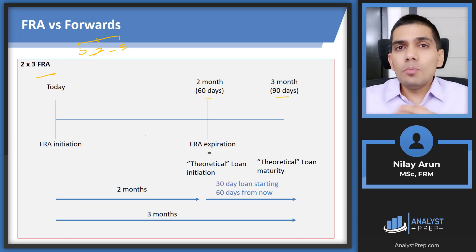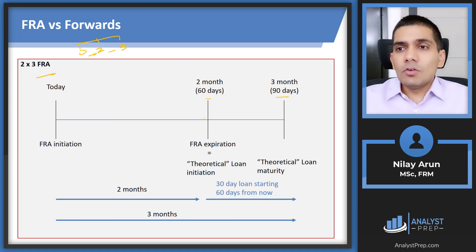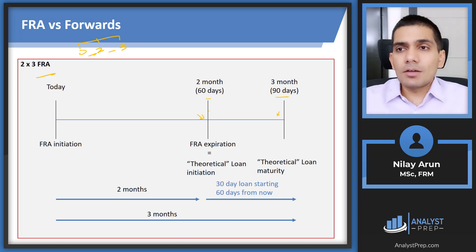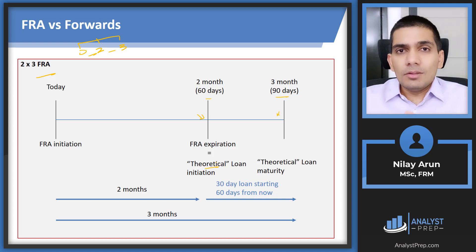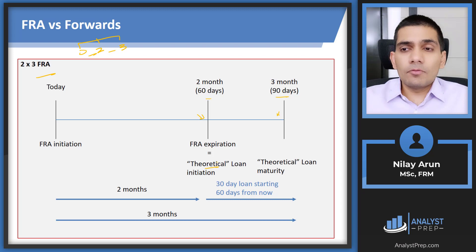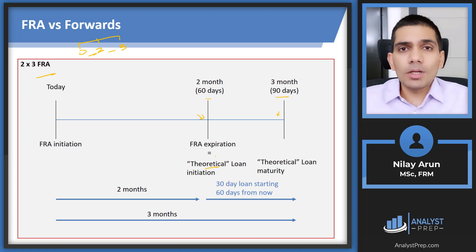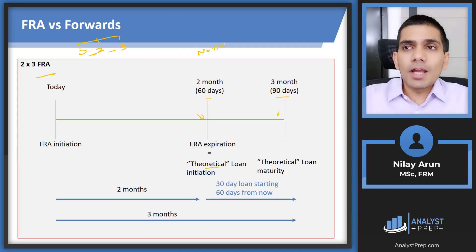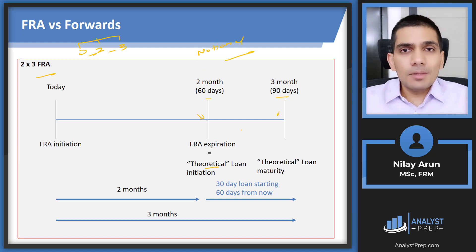We enter the forward contract today, but it expires at the two-month mark — not at three months. The theoretical loan starts at two months and continues to three. We call it a theoretical loan because no real loan is actually made — it is cash settled. Since there is no real principal, we use a notional principal, which is not a real amount but is used purely for calculation purposes.